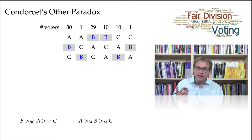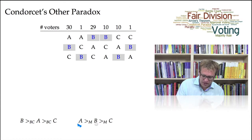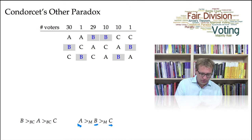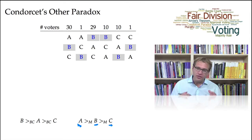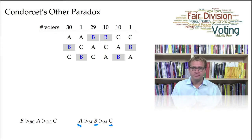So there is a majority ranking — a so-called Condorcet ranking — where candidate A comes in first, B comes in second, and C comes in third. This is another example in which the Condorcet winner and the Borda winner are in fact different.